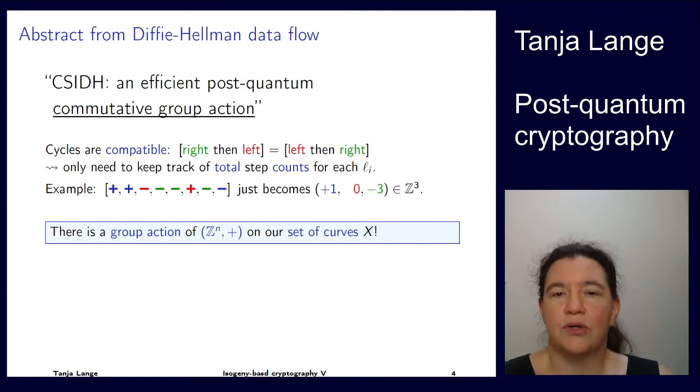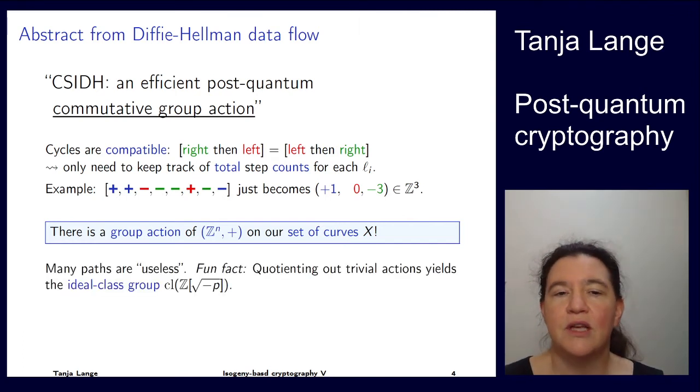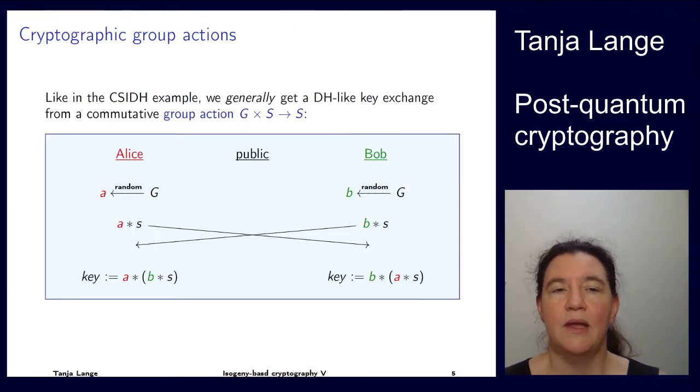This is not the whole story because we're looking at a finite group, and z to the n would be infinite. What we're actually looking at is the ideal class group of the order of this endomorphism ring, which is Z adjoined √−p. When we're cancelling out the trivial actions, we're getting this final group, and there are about square root of p elements in that.